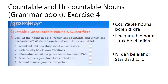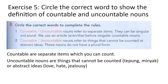Number three: 'Information about our genes comes from our DNA' — information is maklumat, you cannot count it, so uncountable. Number four: 'A mother feels great love for her children' — love is an emotion, abstract, cannot be counted, so uncountable. Number five: 'An aunt of mine gave me this picture' — aunt is countable: two aunts, three aunts. So write C for countable.